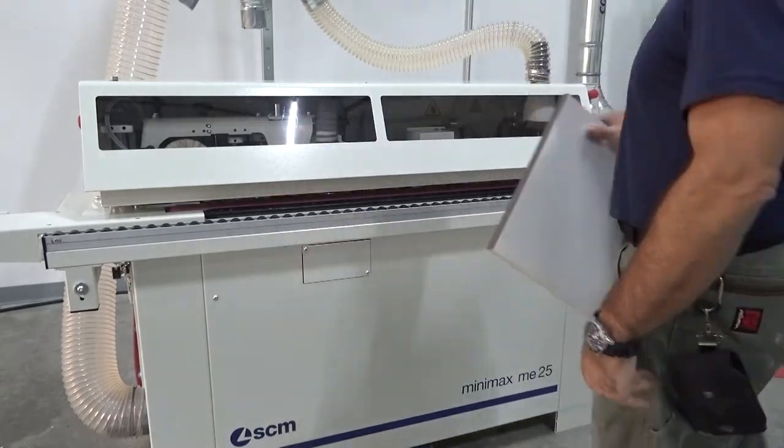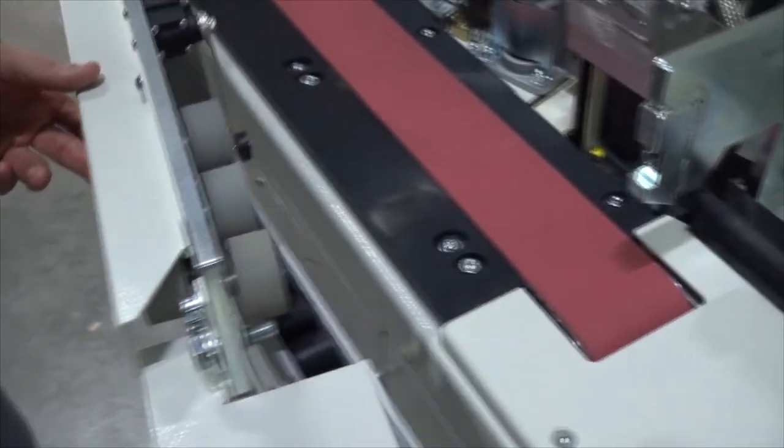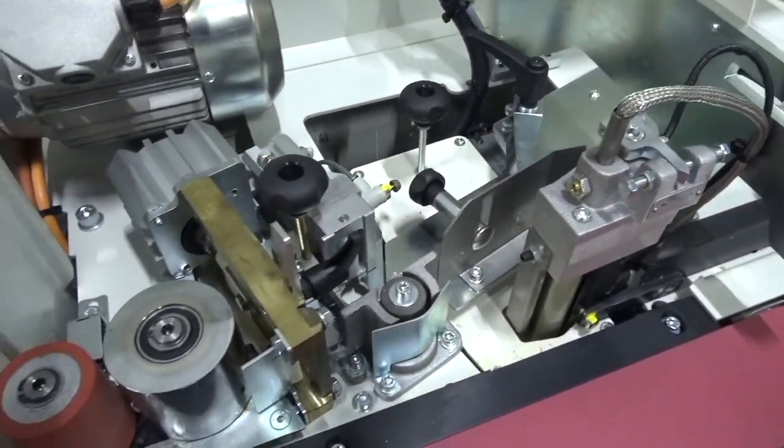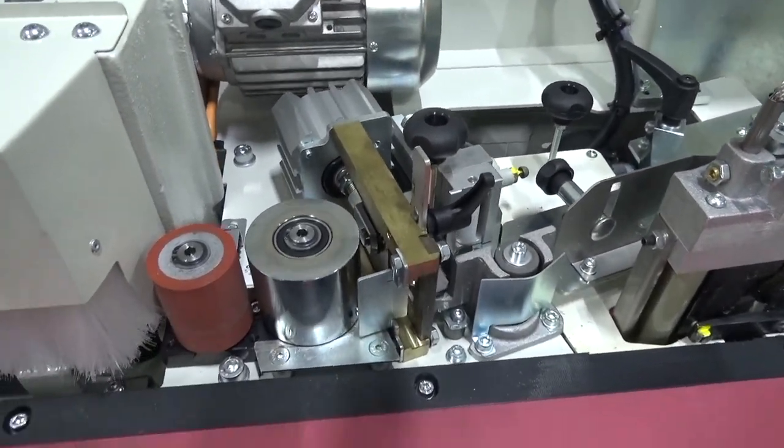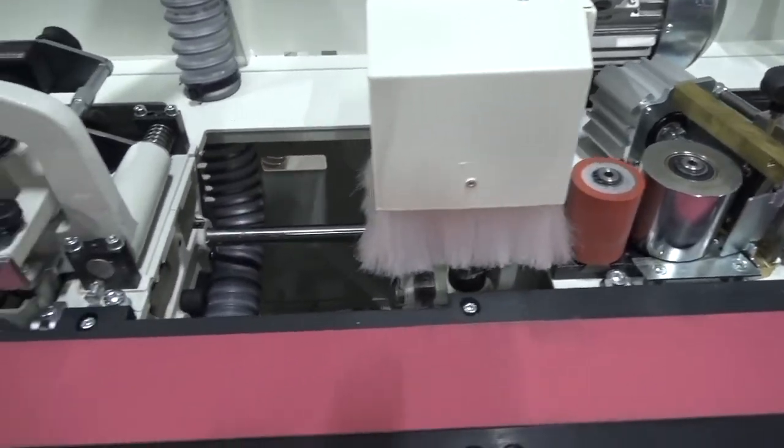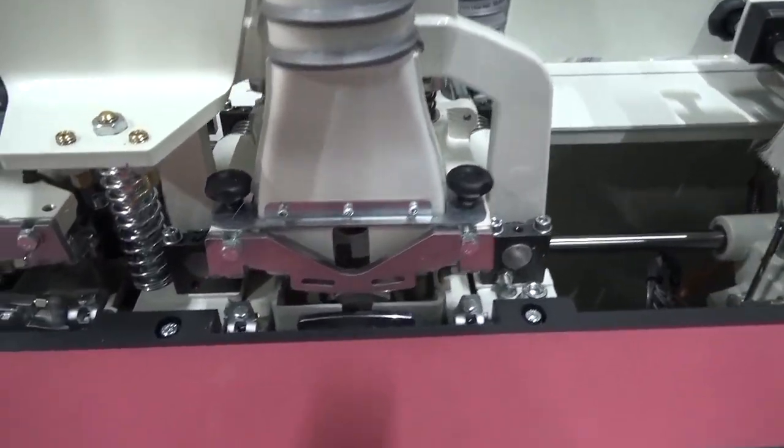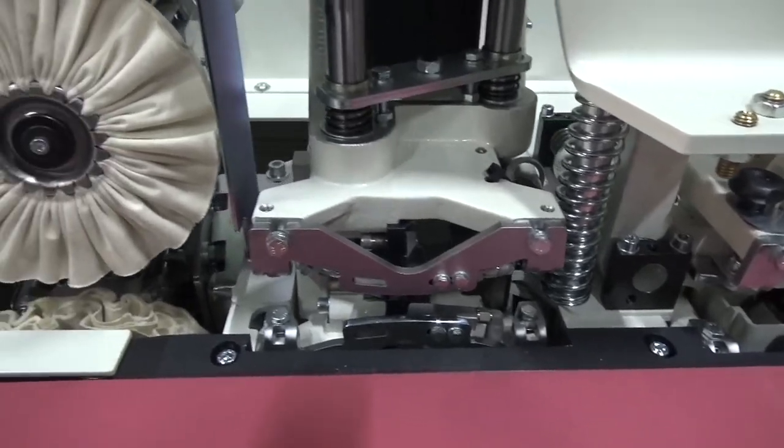There you have it. The ME25 is a very versatile, complete, and compact edge bander for the small shop looking to step up their game, their efficiency, and to save valuable man hours when it comes to banding their edges.